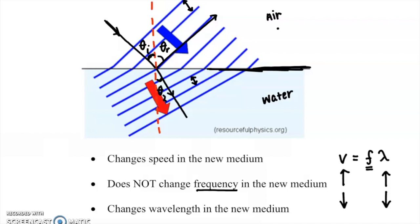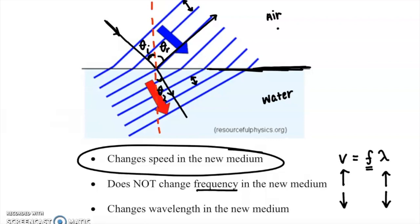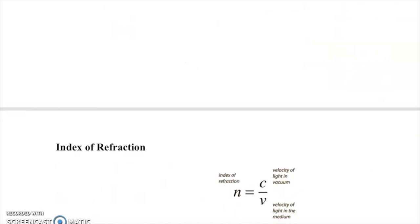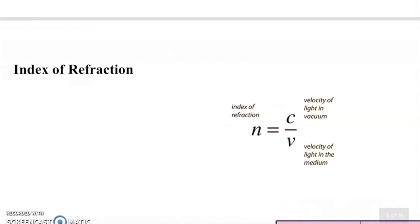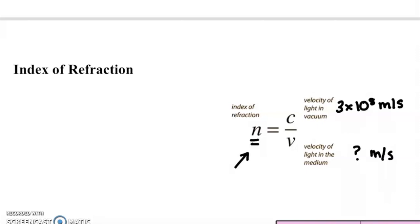Let's get quantitative. The key new variable is the index of refraction, n. The index of refraction equals the velocity of light in a vacuum — 3×10⁸ m/s — divided by the velocity of light in that particular medium. The units cancel, making n unitless.